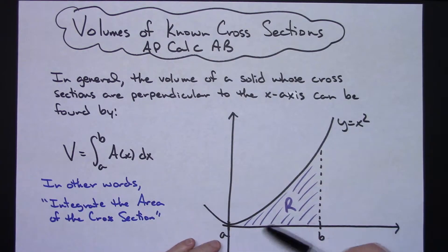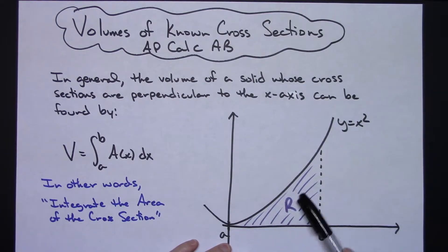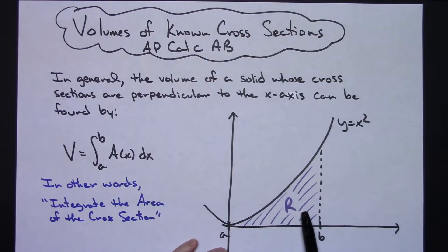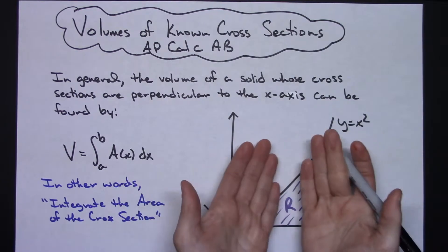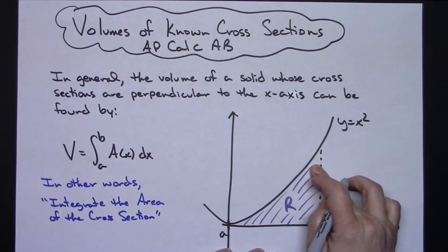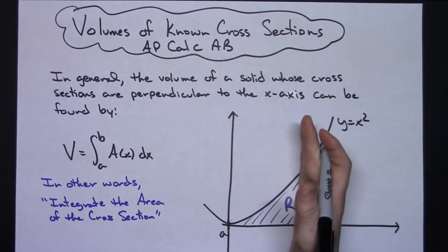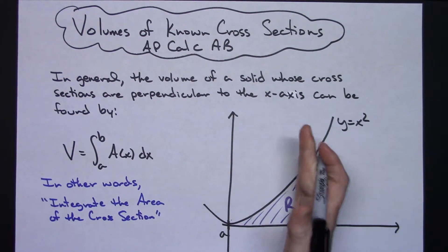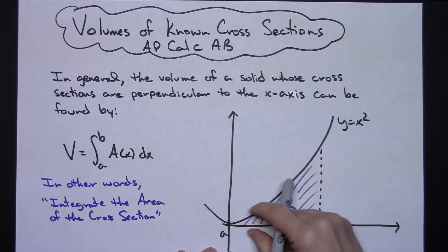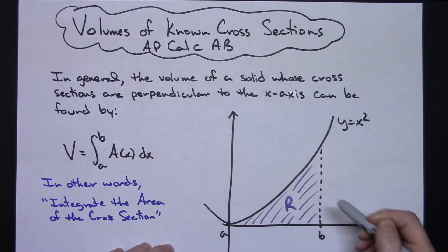Looking at a picture like this — y equals x squared, a standard parabola — let's say I've got a region from A to B. This region is going to be the base of my solid, and my solid is going to grow three-dimensionally up. I'm going to take cross sections — maybe a square, a semicircle, or a right triangle — and those cross sections will all be the same shape but different sizes based on the lengths of the curve, and we are going to integrate the area of those cross sections.